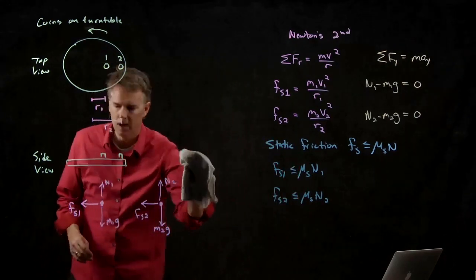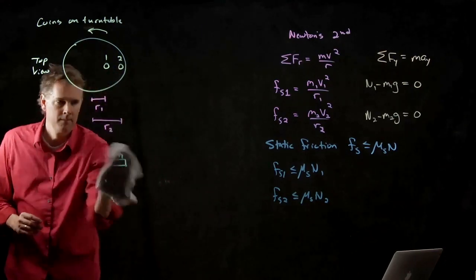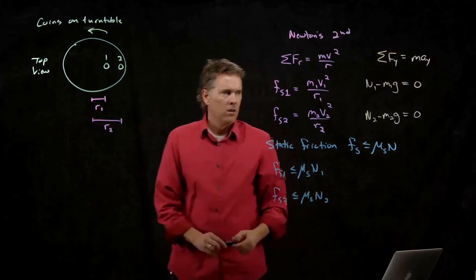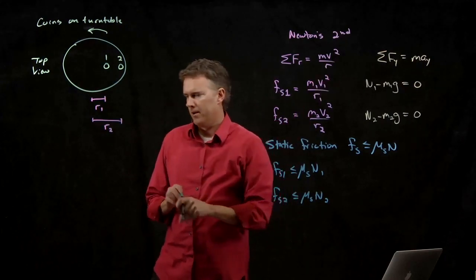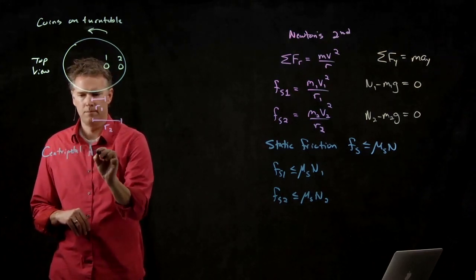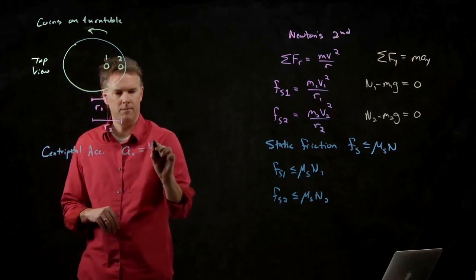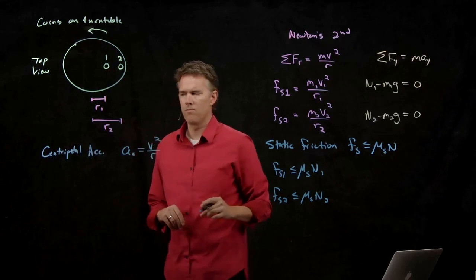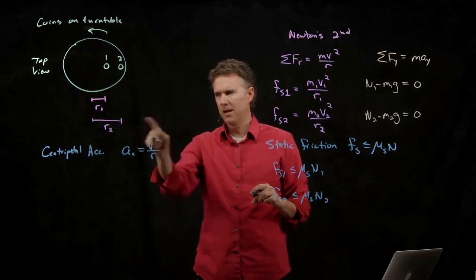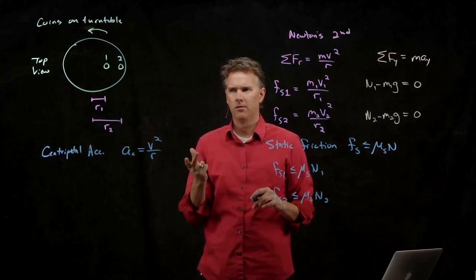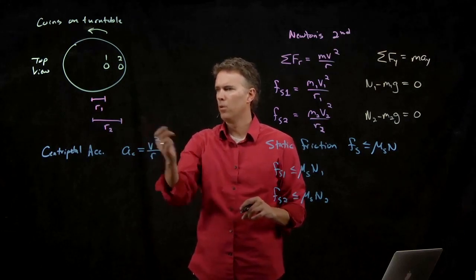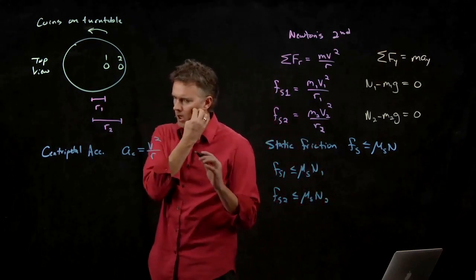And to do that, let's go back to this idea of centripetal acceleration. Centripetal acceleration is right there, right? It is V squared over R. But we don't know exactly what V is for coin 1 or 2, and we have some idea what R is. How are we going to relate these two? V is certainly different for coin 1 and 2. R is certainly different, but we don't know which one is going to win. So we need to rewrite this.